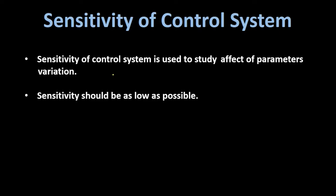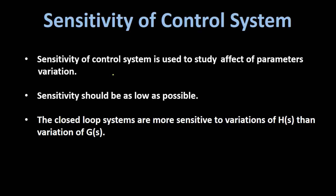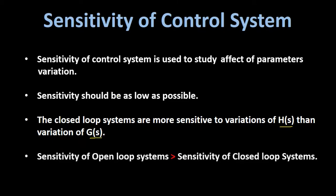A good control system should be less sensitive to external and internal disturbances. A highly sensitive control system means its output is highly affected by external and internal disturbances. Closed loop systems are more sensitive to variation of feedback part transfer function H(s) than forward part transfer function G(s). Also, sensitivity of open loop control systems is greater than the sensitivity of closed loop control systems.